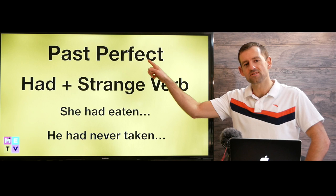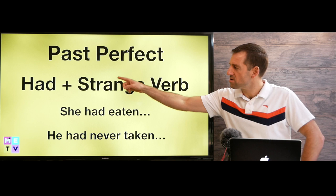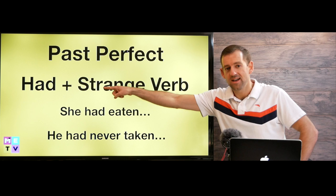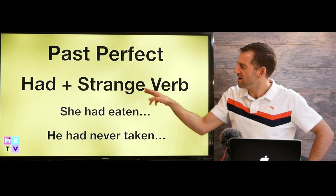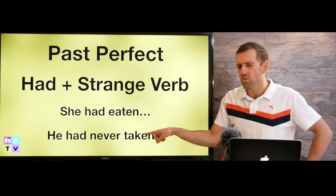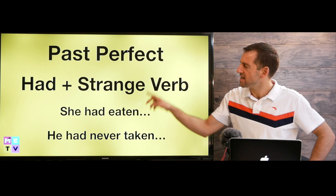So how do we make the past perfect verb tense? We use the verb 'had'. If it was the present perfect, it would be 'have'. If it was the future perfect, it would be 'will have'. But this is the past, so it's 'had'. And then with our perfect tenses, we have these strange verbs like 'eaten', 'taken', 'woken' — those are called past participles. We use these in the perfect tense.